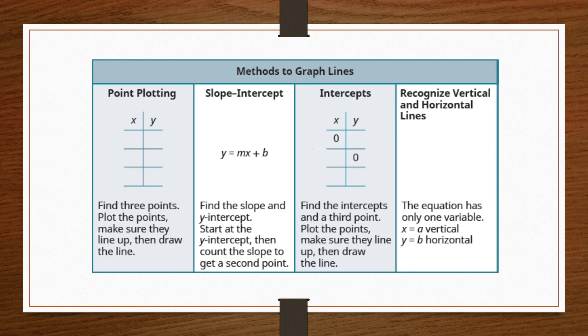And sort of a special case are the two types of equations where we have something like X equals a constant or Y is equal to a constant in which case we have either a vertical or horizontal line.